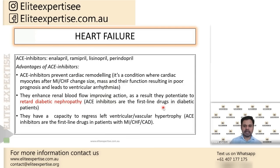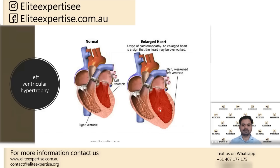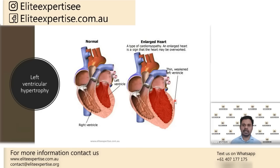Regarding ventricular remodeling, ACE inhibitors prevent cardiac remodeling and left ventricular hypertrophy. Looking at the diagram, this is the normal size and shape of the heart. On the right-hand side, you can see the left ventricle has undergone hypertrophy — it has enlarged. The left ventricular size, shape, and function have been changed: the size and shape have increased, and its function has been reduced.